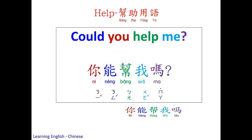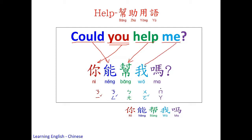Next, let's see the sentence: Could you help me? Could — 能; You — 你; Help — 帮, 帮助; Me — 我; Question — 吗. Could you help me?